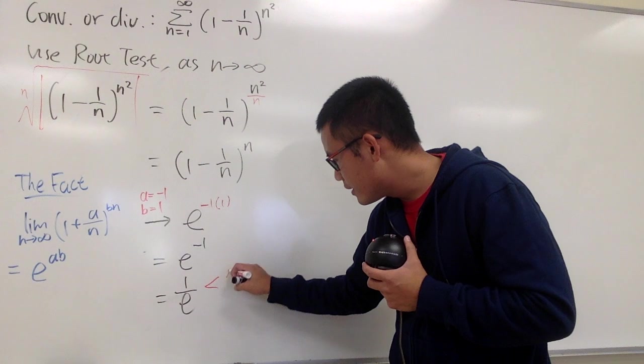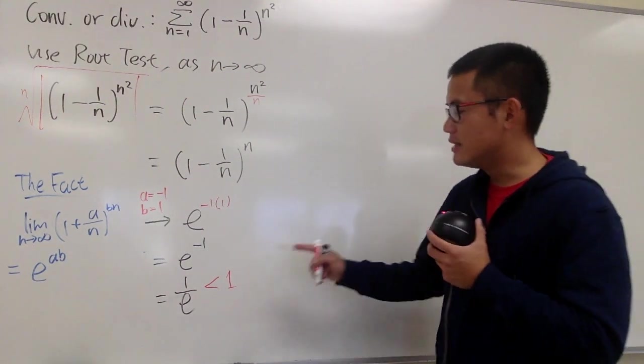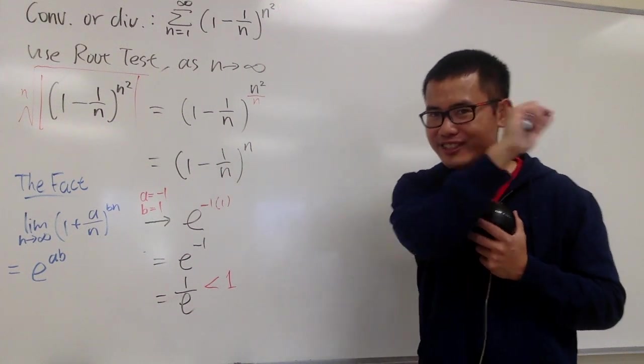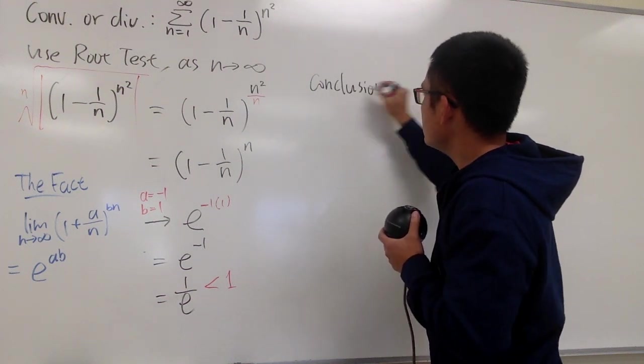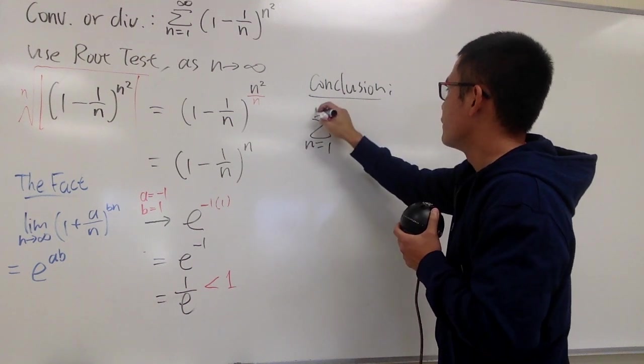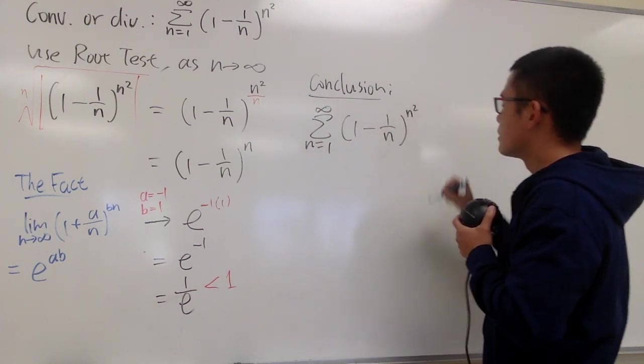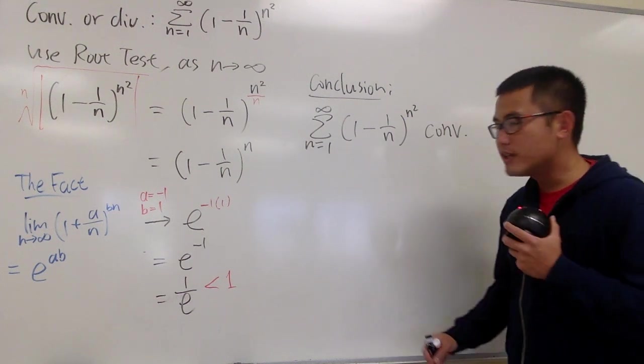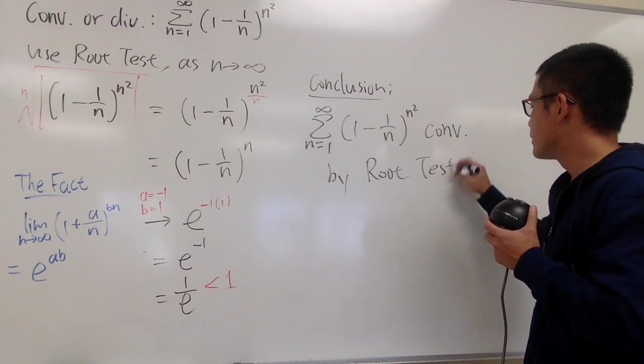So, this right here, the limit is less than 1. That's great because this will tell us that the original series converges. So, now let's just write it down. Conclusion. The original series, the sum when n goes 1 to infinity, 1 minus 1 over n raised to the n squared power, this right here converges by the root test.